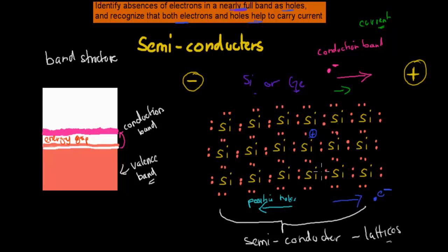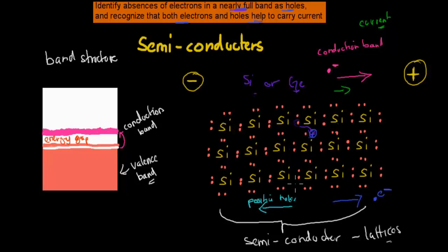So we carry current both via conduction electrons moving from negative to positive, and via the actual holes moving in the opposite direction — from positive to negative. But as the holes are moving, what's actually happening is electrons are moving in the opposite direction, always jumping from one hole to the next, and by doing so they leave their own hole. That's why the holes appear to move from positive to negative — because electrons are moving from negative to positive. What you should know is that both the holes and the conduction electrons are helping to carry current.